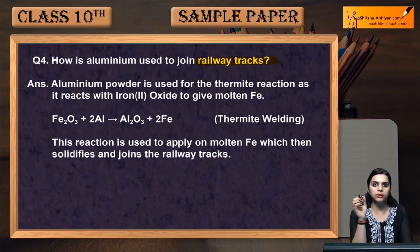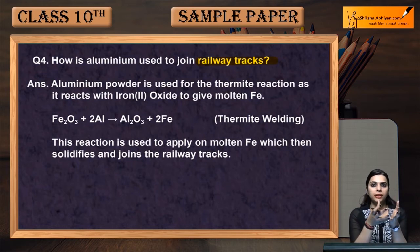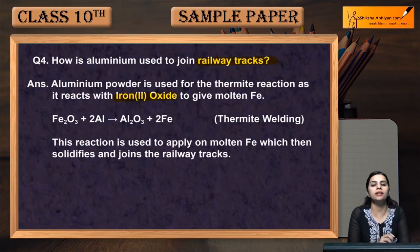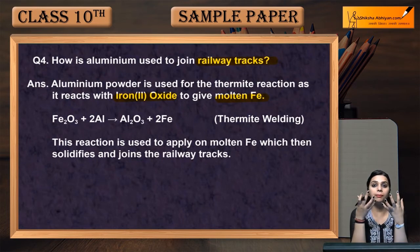How do we use aluminium powder to join railway tracks? Railway tracks are made of iron. There is a thermite reaction between iron and aluminium. Aluminium powder is used for the thermite reaction as it reacts with iron oxide — the iron present in oxide form in the railway tracks — to give molten iron.